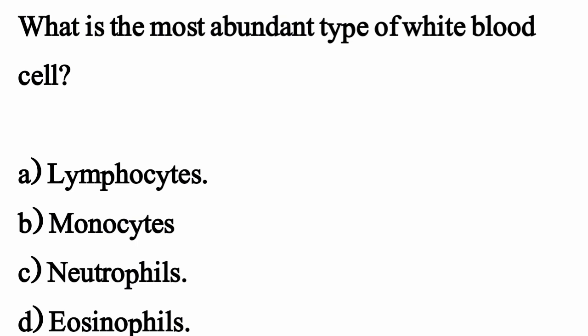What is the most abundant type of white blood cell? The correct option is Option C: Neutrophils.